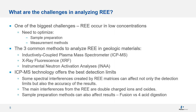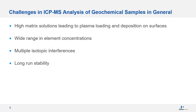Appropriate sample preparation before analysis by ICP-MS is crucial for accurate results. This is usually either a fusion technique or some form of acid digestion, typically a 4-acid digestion. Depending on the preparation method chosen, various complications may be introduced. The fusion technique using lithium borate flux is widely used for samples that are very refractory and otherwise hard to digest. There are four main challenges to overcome: high matrix solutions leading to plasma loading, wide range in element concentrations, multiple isotopic interferences especially with complex matrices, and long-run stability.